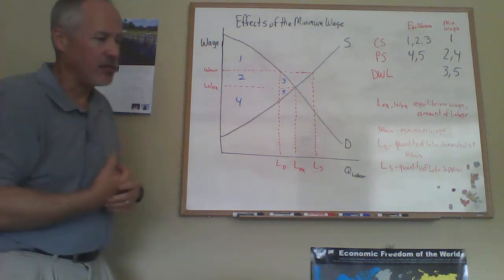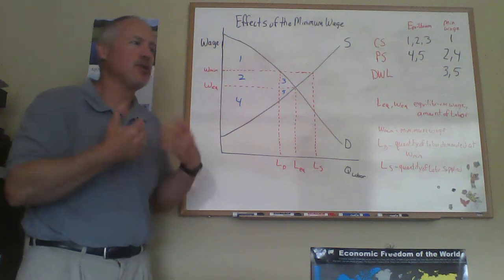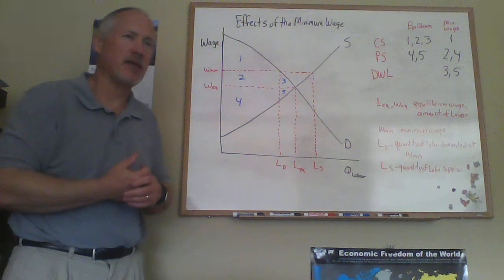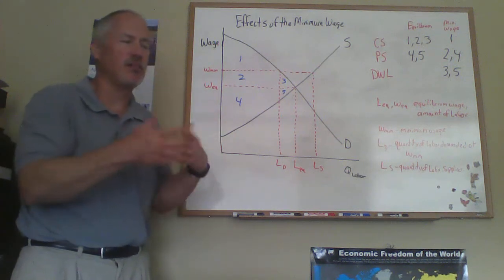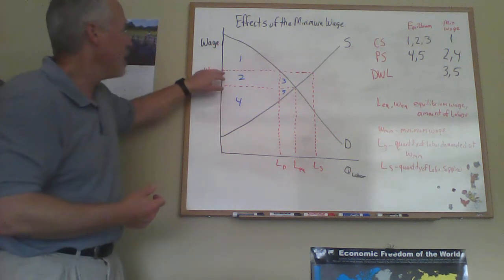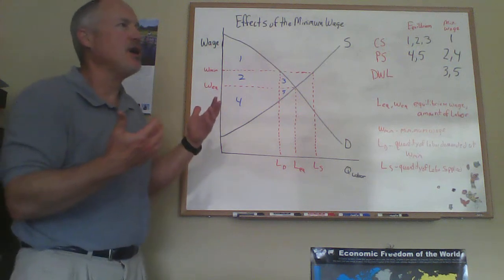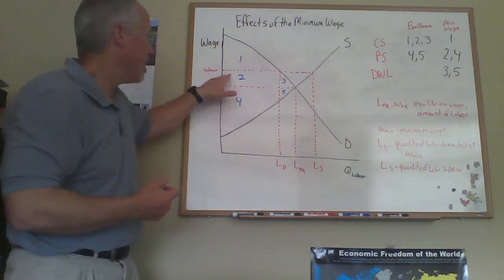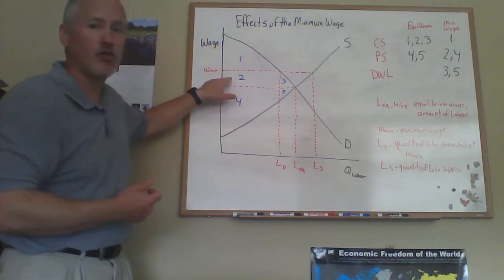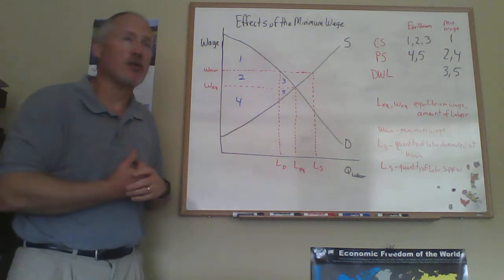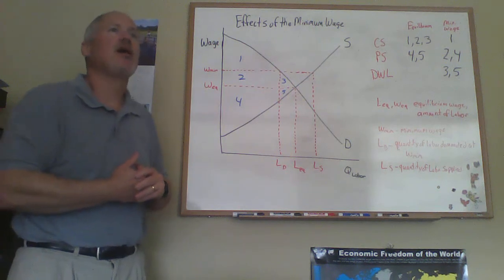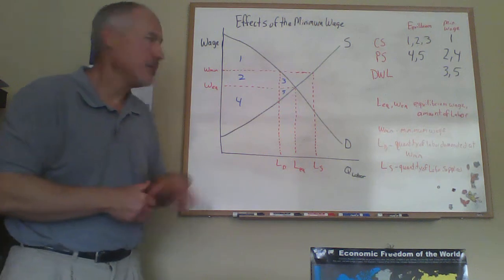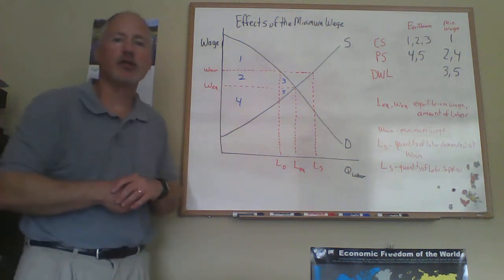For people who advocate a minimum wage and say we need it to address livability issues — people being able to work and still afford things in life — and who want a minimum wage to make workers better off, the area of the transfer does show that. The minimum wage, in some sense, does achieve its intended goal of making some workers better off. The workers who keep their jobs make more money and are better off.